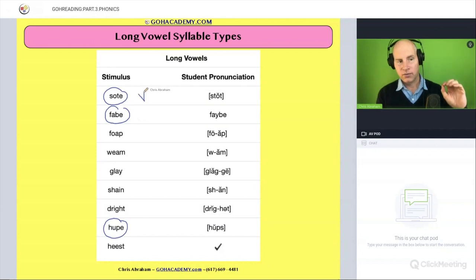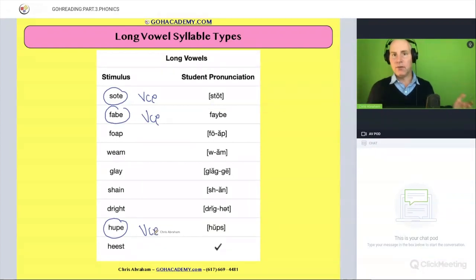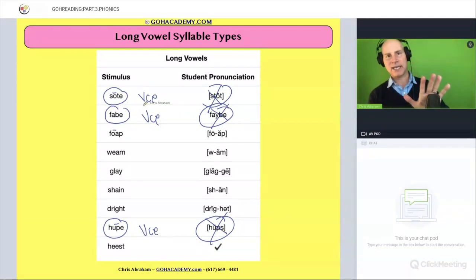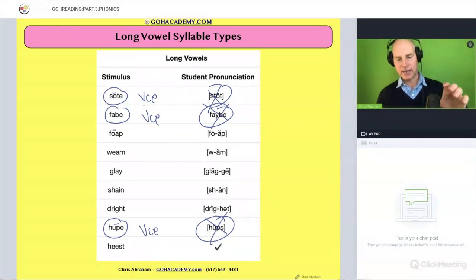They're all vowel consonant magic E words. Is that right? That's the first one. So it's a long vowel syllable type, or it's a vowel consonant magic E where this letter is long. And they're getting it wrong. Do you see that they're not getting the long vowel? They're doing something else there too. They're not quite getting it. It's supposed to be stoked and they say stopped. This is supposed to be fade and they say baby. This one's supposed to be youp and they say hups. So there's things going on here, but the biggest thing is they're not getting this syllable type pattern, right?